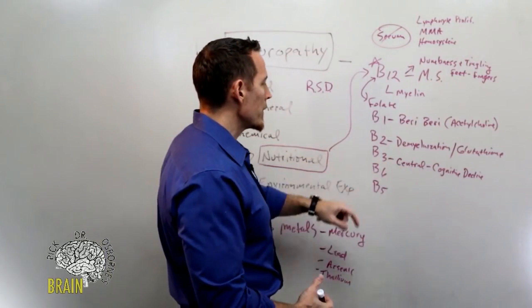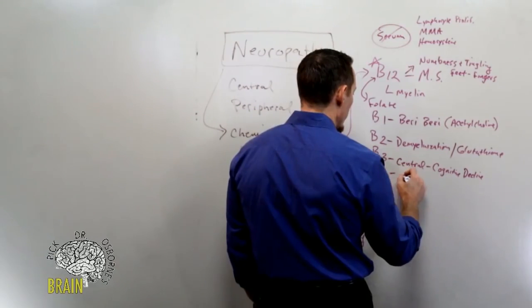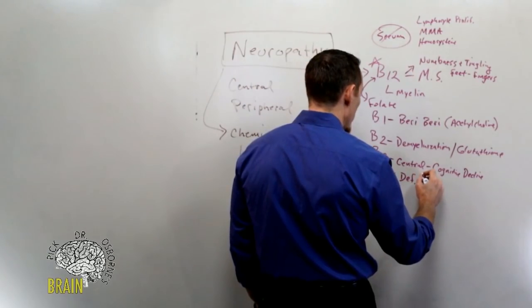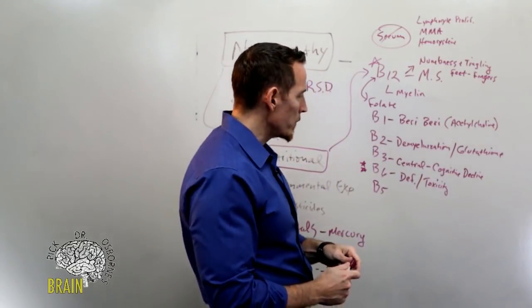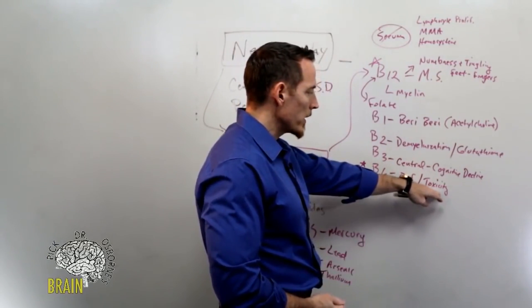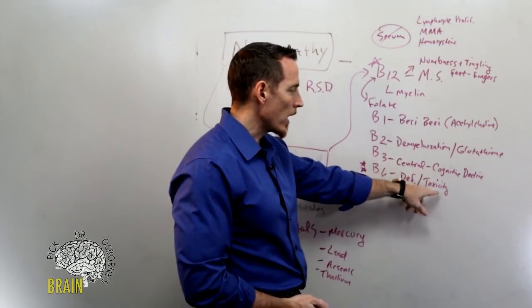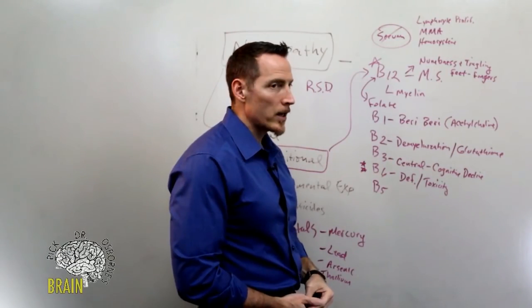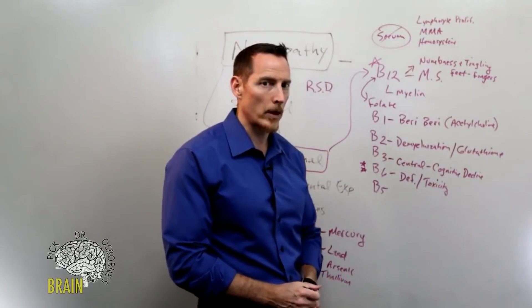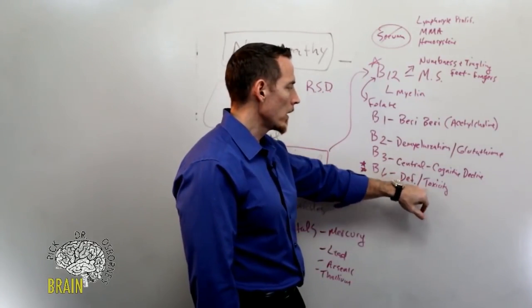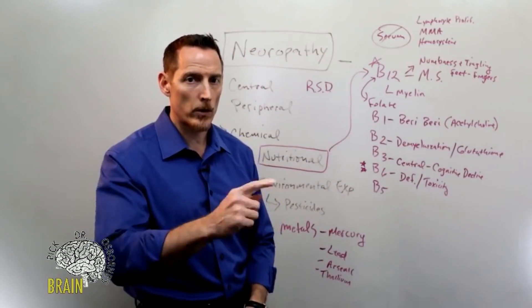Then you've got B6. Now B6 is unique because B6 deficiency can cause neuropathy, but so can a B6 toxicity. Some of you may have taken B vitamins, and if you've ever taken too much B6 and ever experienced numbness and tingling begin, agitation can happen as well, so mood swings, agitation, numbness and tingling in the hands and feet. Very common as a toxicity, too much B6. It's actually really the only B vitamin that has any known toxicity symptoms is vitamin B6. If you're taking high doses of vitamin B6, generally upwards of 200 milligrams a day for long periods of time, then you can run the risk of developing a vitamin B6 neuropathy from a toxicity perspective. So again, this one can create neuropathy both ways, whether you're deficient in it or whether you're toxic in it.